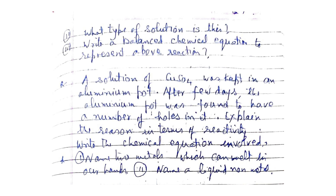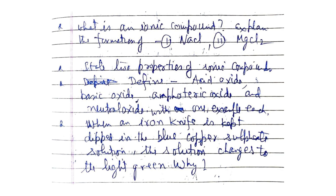Name two metals which can melt in our hands. Name a liquid non-metal. What is an ionic compound? Explain the formation of sodium chloride and magnesium chloride. State two properties of ionic compounds. Define acidic oxide, basic oxide, amphoteric oxide, and neutral oxide — with one example each.